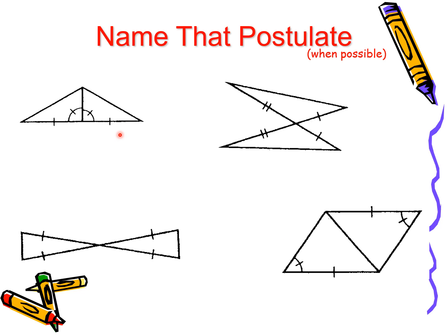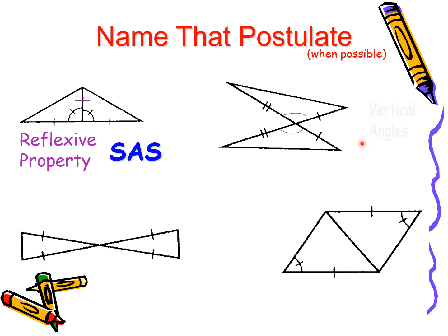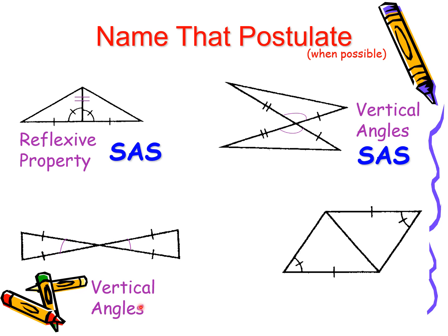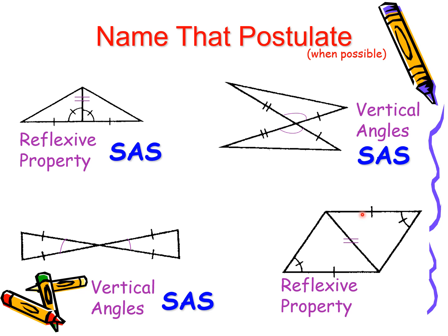Now let us state the reason and name the postulate. The first uses reflexive property — used when two triangles share a common side — giving us side, angle, side: SAS. The next uses vertical angles are congruent, giving side, angle, side: SAS. Another uses vertical angles are congruent: side, angle, side — another SAS. And the last uses reflexive property since they share a common side, but looking at the parts it is side, side, side, angle — which is a big no.